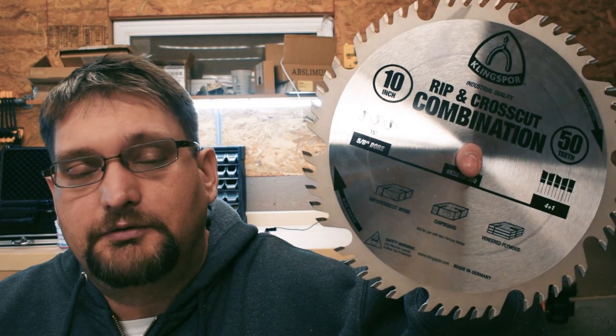This is the Kling Spore Rip and Crosscut Combination Blade. In this review we'll do some comparison cuts and compare this blade with the Forest Woodworker II and the Freud Industrial Rip Blade. These are the two blades that I use most in the shop, so if I can find a way to leave one blade in the table saw, I'm all about it.